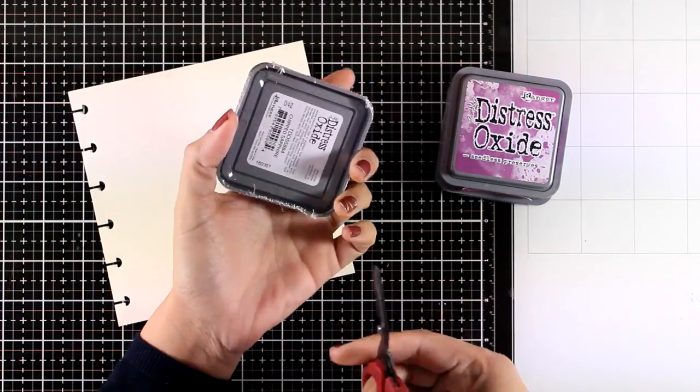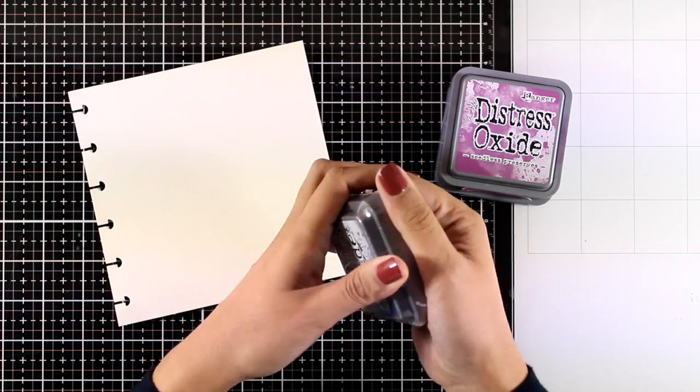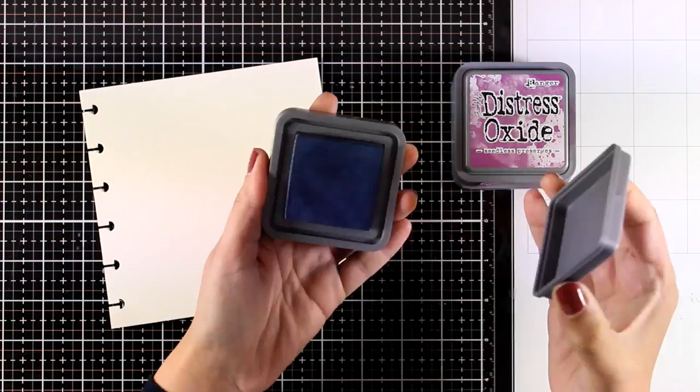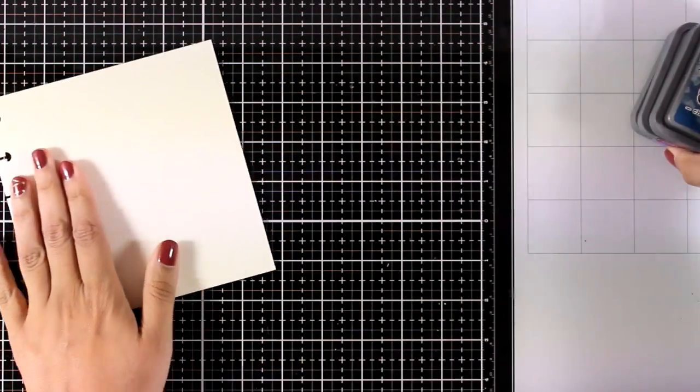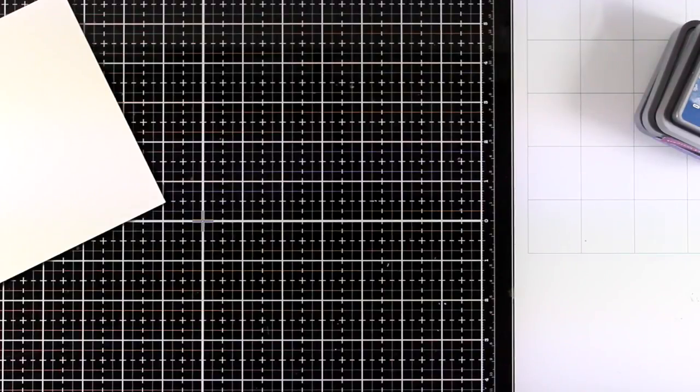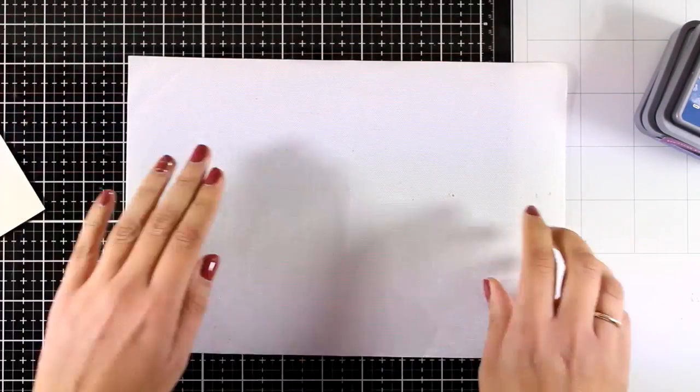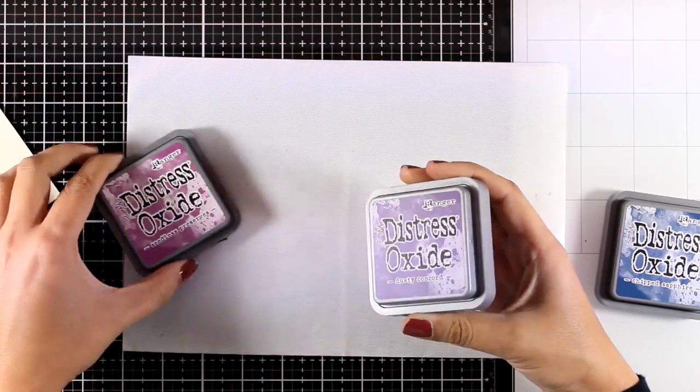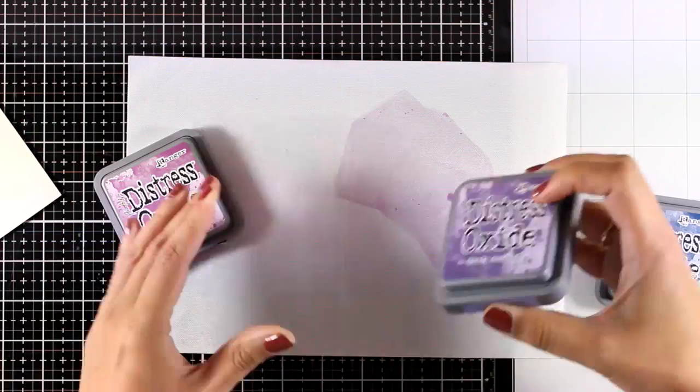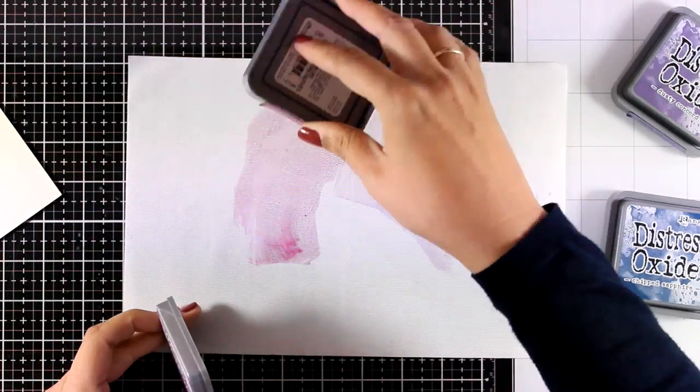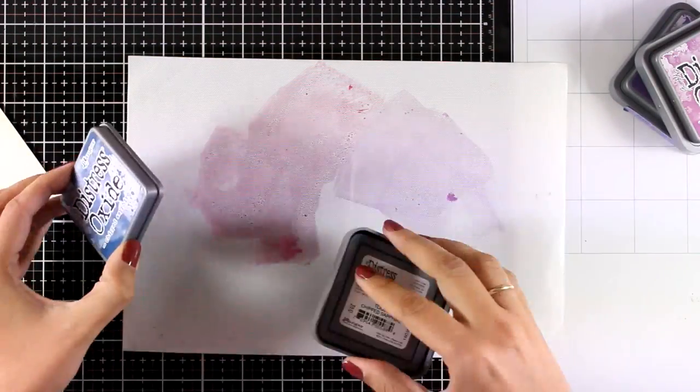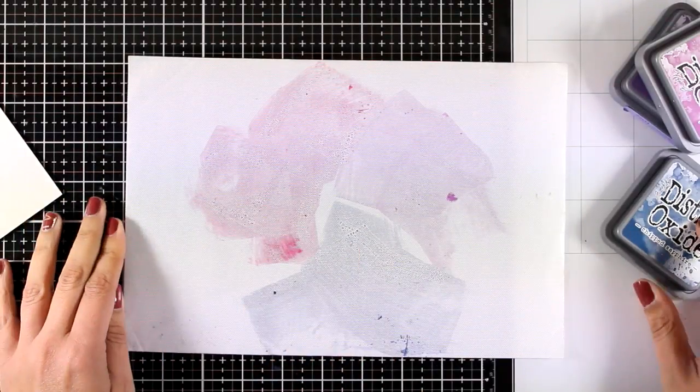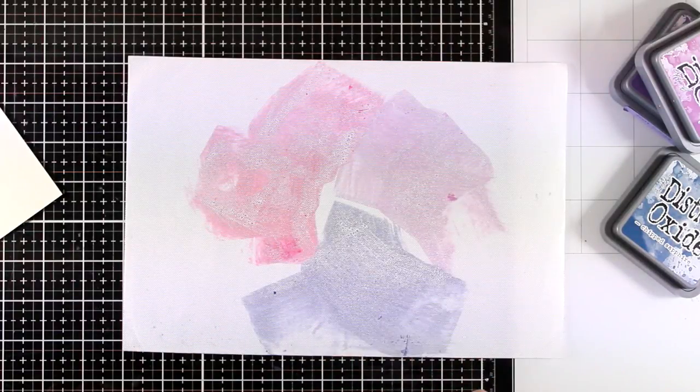Today I'm going to mix old and new Distress Oxide inks. So this is a brand new color, this is called Chipped Sapphire and it's a gorgeous color. And I am going to mix two more from the older collections which are Dusty Concord and Seedless Preserves. I'm working on my non-stick silicone mat which came with my glass mat. This is going to ensure that the technique that I'm going for is going to work great. So I am applying three colors directly on top of my mat and now I'm going to spray them.